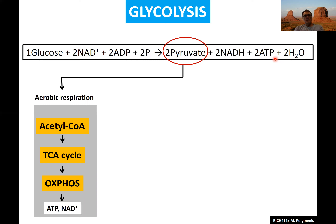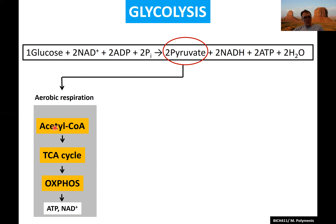Pyruvate, the product of glycolysis, has many fates. One is to enter aerobic respiration, where it's converted to acetyl-CoA, which enters the TCA cycle. All the electrons on pyruvate find their way onto NAD⁺ to become NADH. The electrons are then transferred through the electron transport chain, which allows cells to charge their batteries before the electrons finally land on oxygen — that's why it's called aerobic respiration. All the NADH is converted back to NAD⁺, and ATP synthase makes ATP.